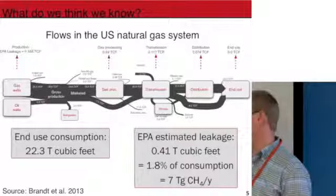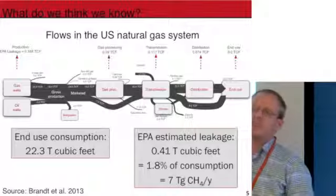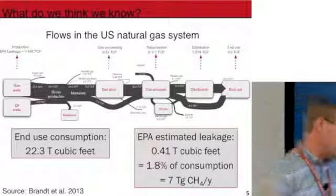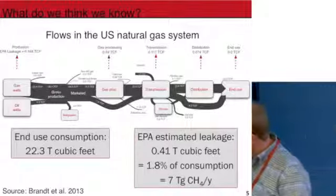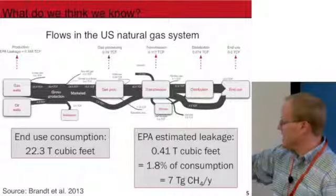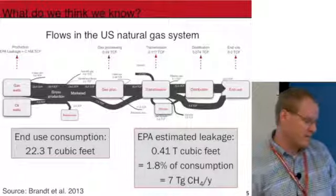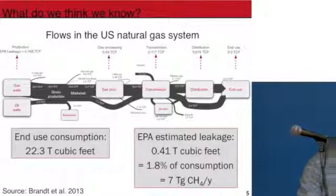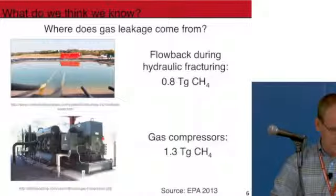This is the largest source of methane to the atmosphere from anthropogenic sources in the US, followed fairly closely by things like petroleum systems, wastewater treatment, and cows. About 7 teragrams is the largest source.